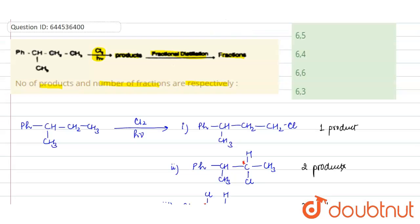So if you see, total product: 1 plus 2 plus 2 plus 1, so total 6 products are obtained. So number of products: there are 6. And after fractional distillation, 4 fractions will be obtained. So your answer will be B option: 6 and 4 respectively.